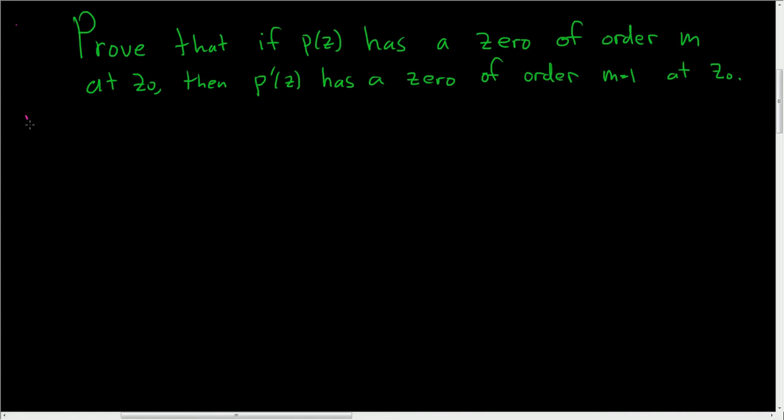This should be a pretty straightforward proof. Let's go ahead and try it. So we'll start by supposing that p has a zero of order m at z naught. So suppose p of z has a zero of order m at z naught.